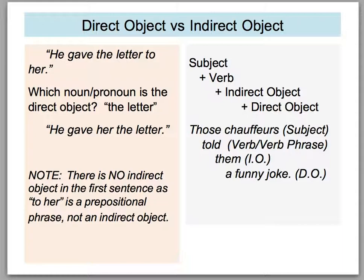Her is not considered an indirect object in this sentence because 'to her' is a prepositional phrase, not an indirect object. An indirect object is more direct in the wording. On the right side of the screen: subject plus verb plus indirect object plus direct object. 'Those chauffeurs told them a funny joke' — them is the indirect object because it says told them, not told to them. A funny joke is the direct object.